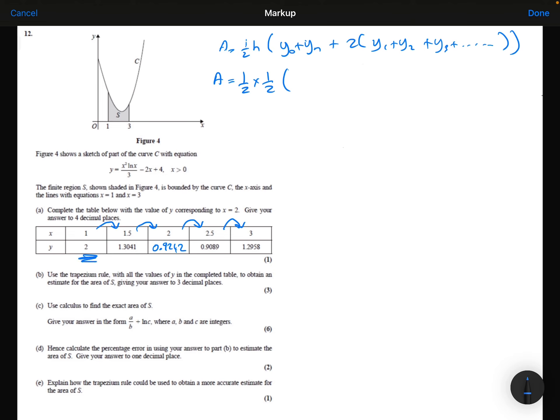Our first value is 2, our last value is 1.2958, and then we've got two lots of everything on the inside. So two lots of the 1.304, two lots of the 0.9242, and two lots of the 0.9089. Typing that into my calculator, I find to three decimal places that the area is 2.393. That's my answer for Part B.